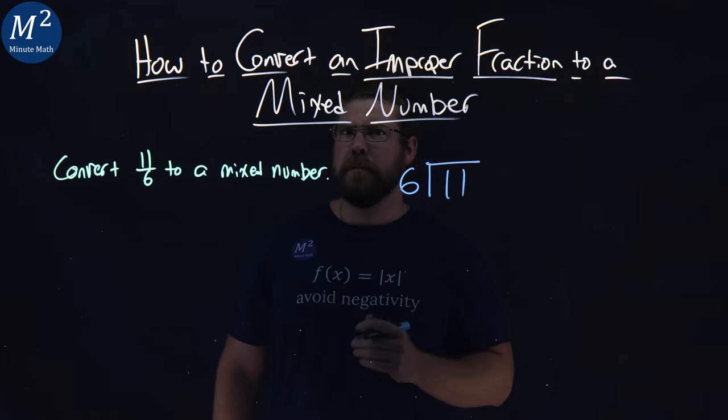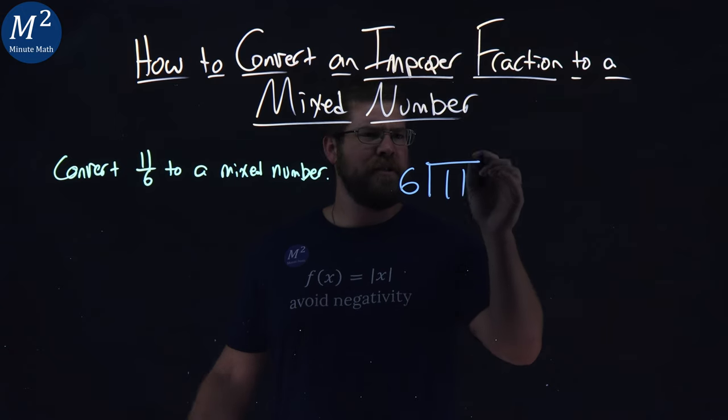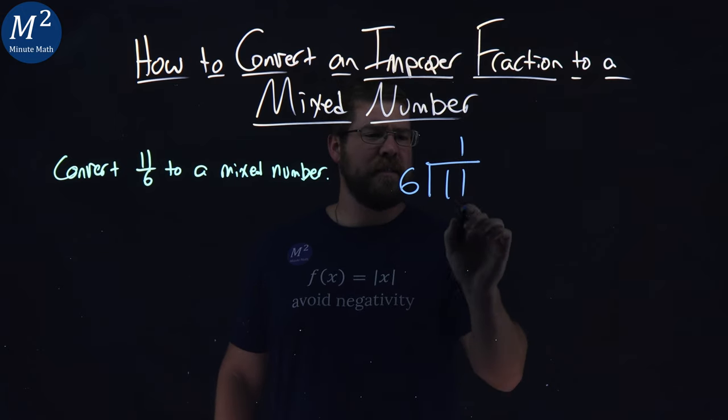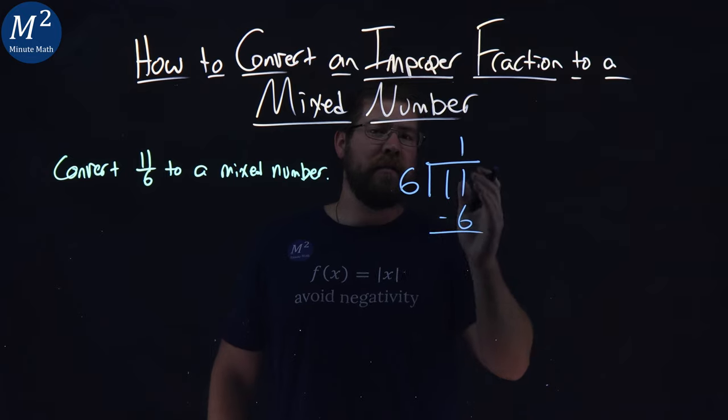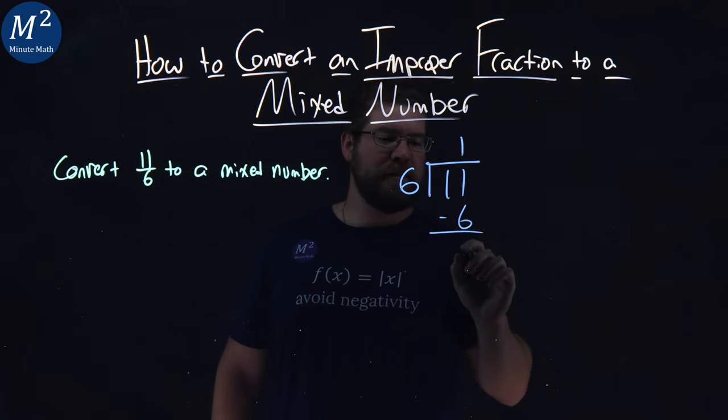Long division here, it's one time. 1 times 6 is 6. We subtract, 11 minus 6 is 5.